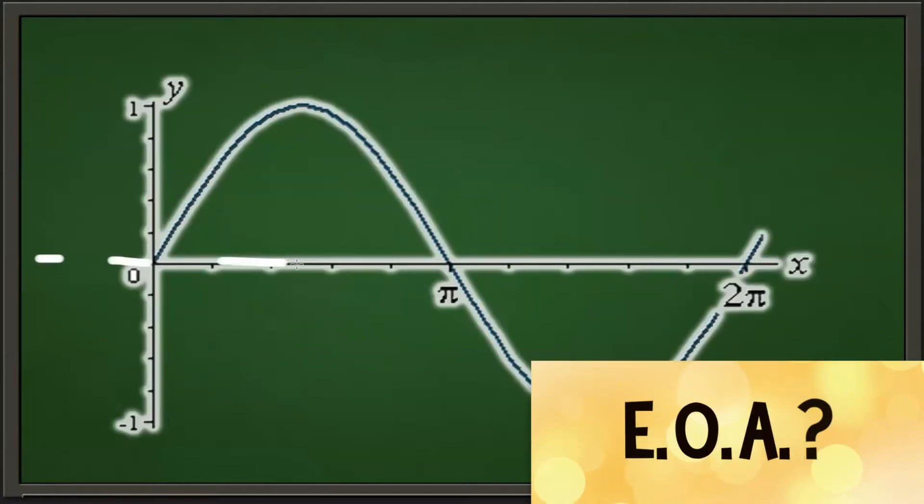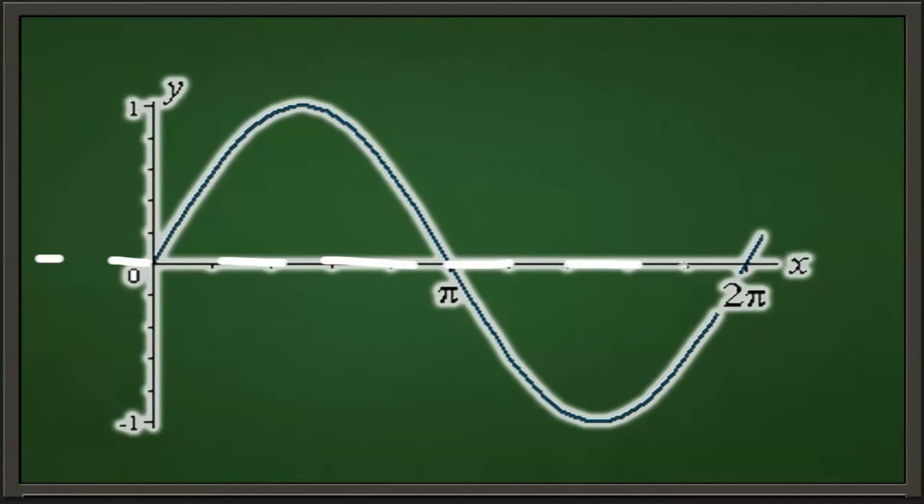Next you want to locate your equation of axis as this is the horizontal line halfway between the maximum and minimum. And this is determined by (maximum + minimum)/2. So now let's calculate our equation of axis.